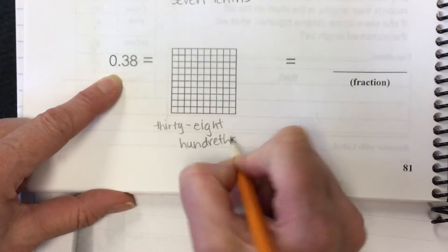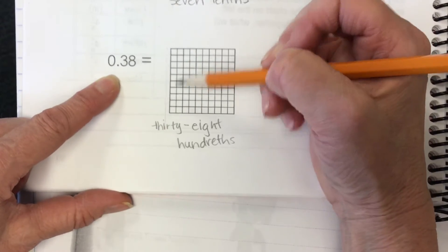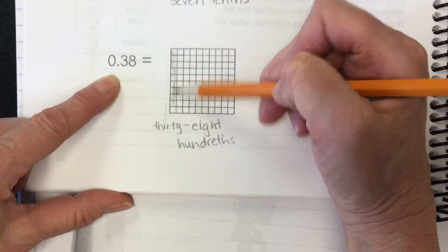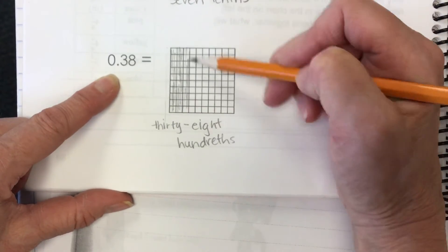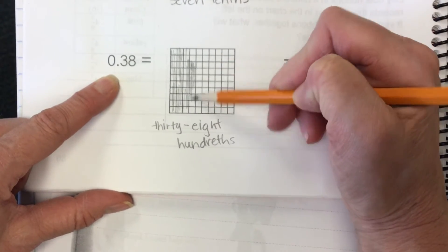So again, each of these columns is 10. So we shade in this 10, then 20, then 30, and then 8. So all but 2 in the next column.